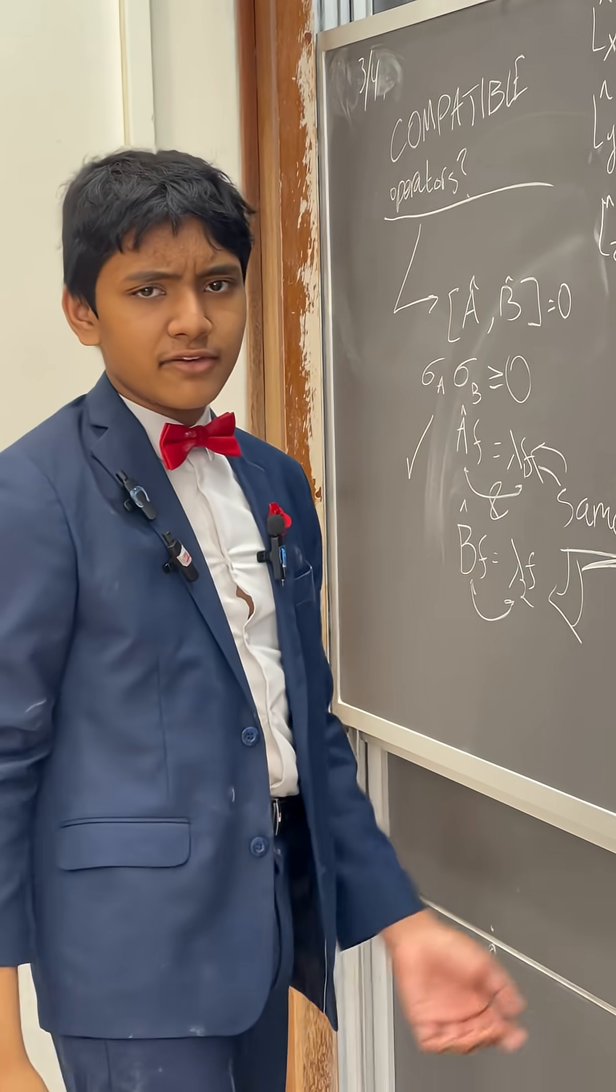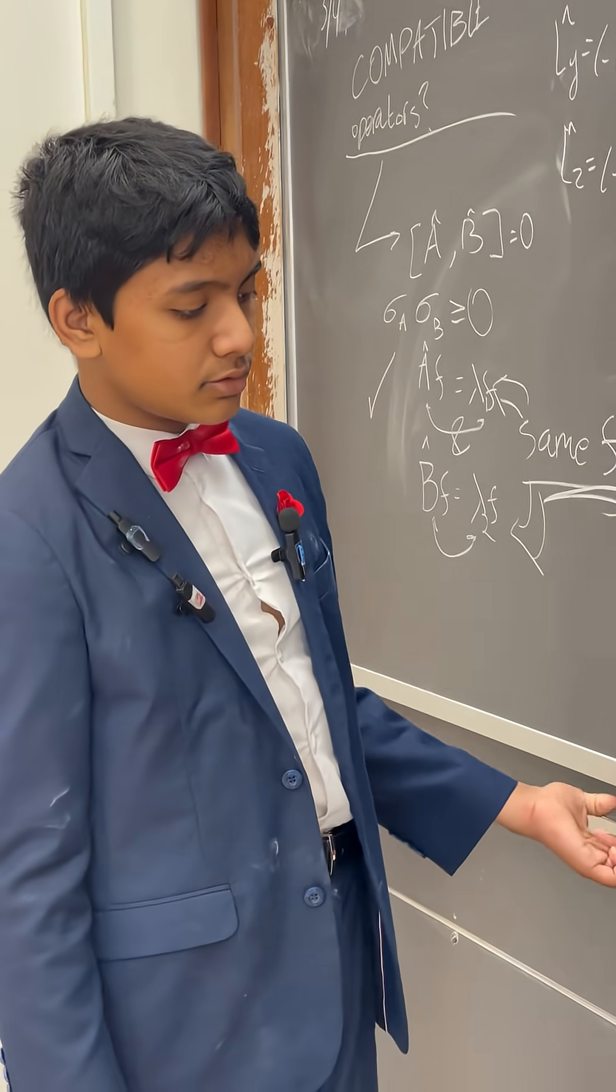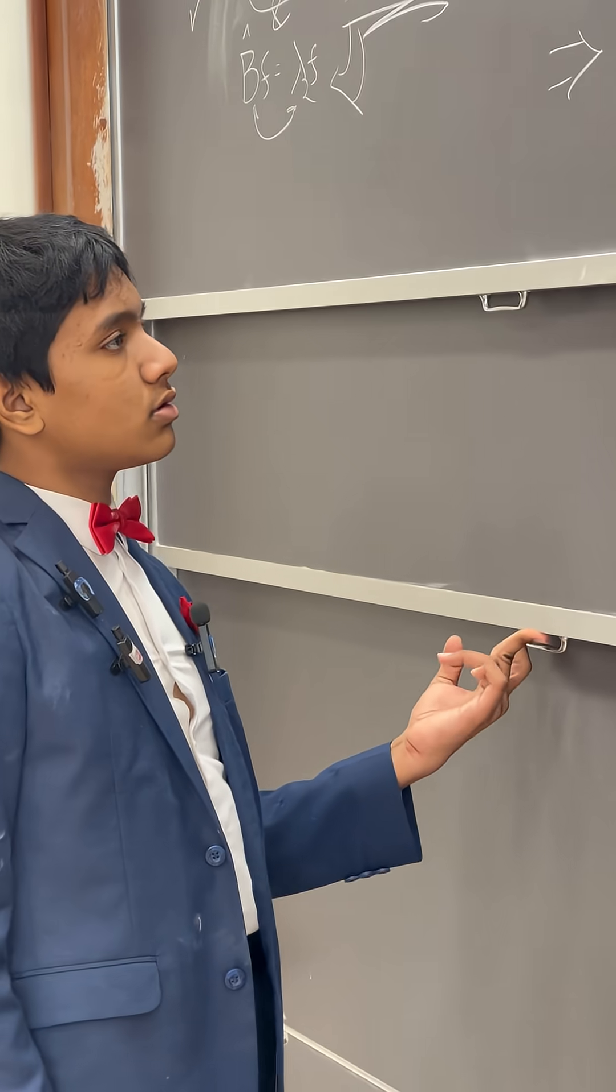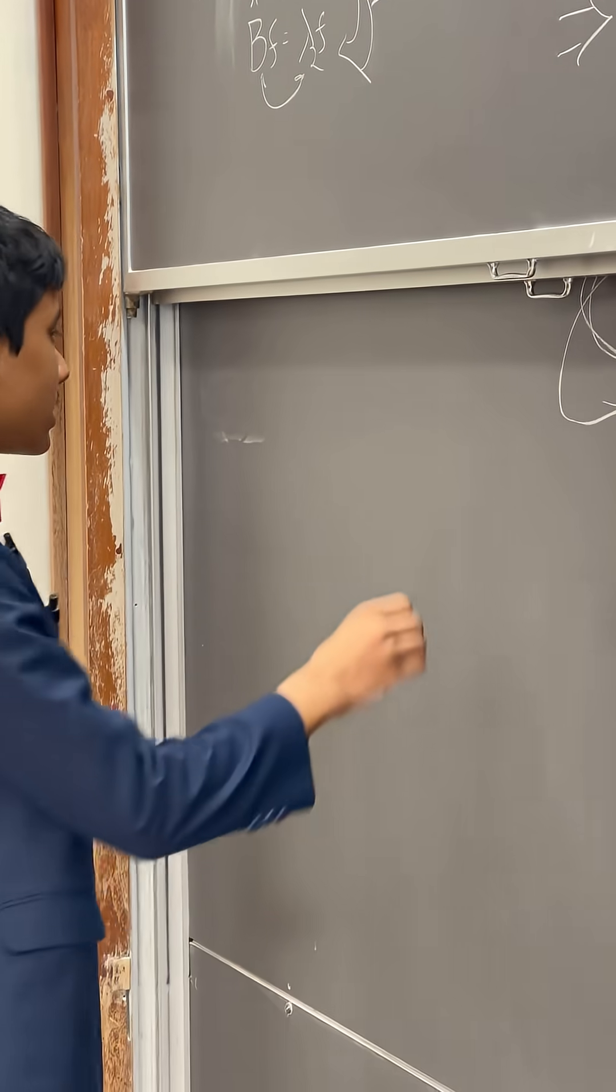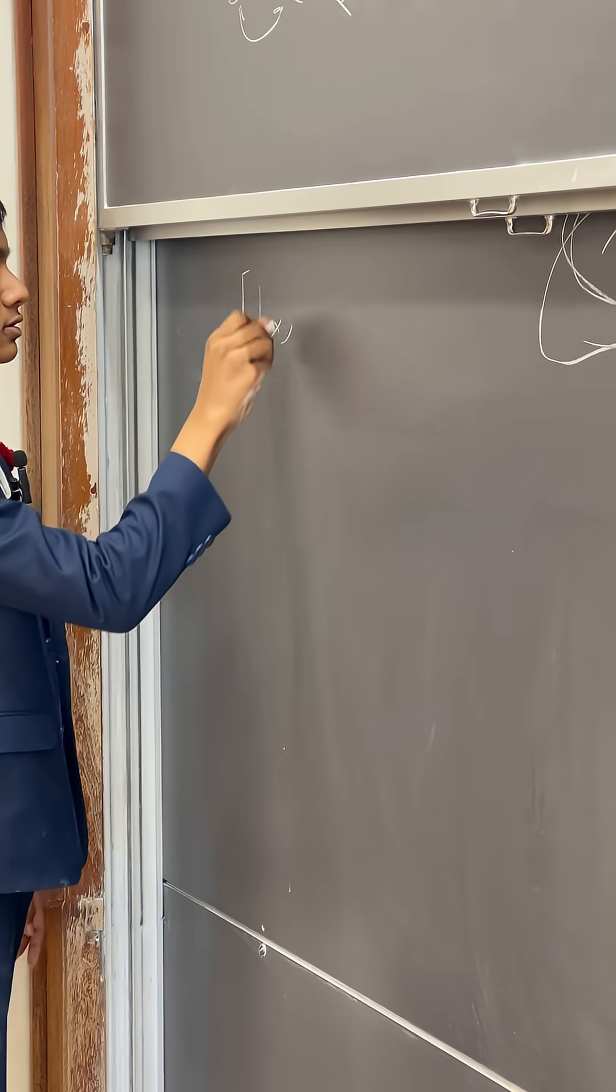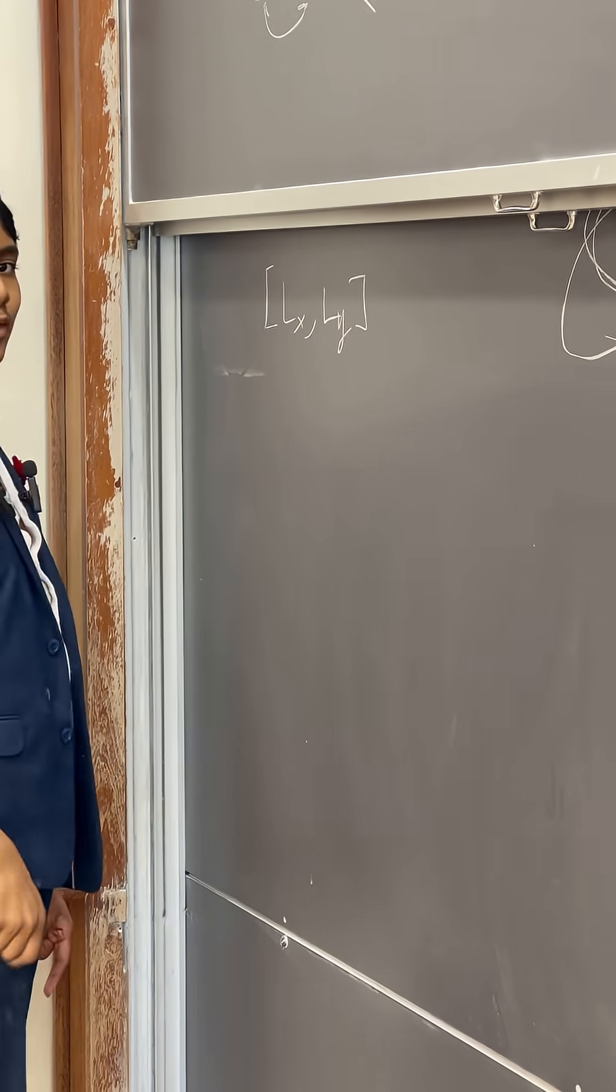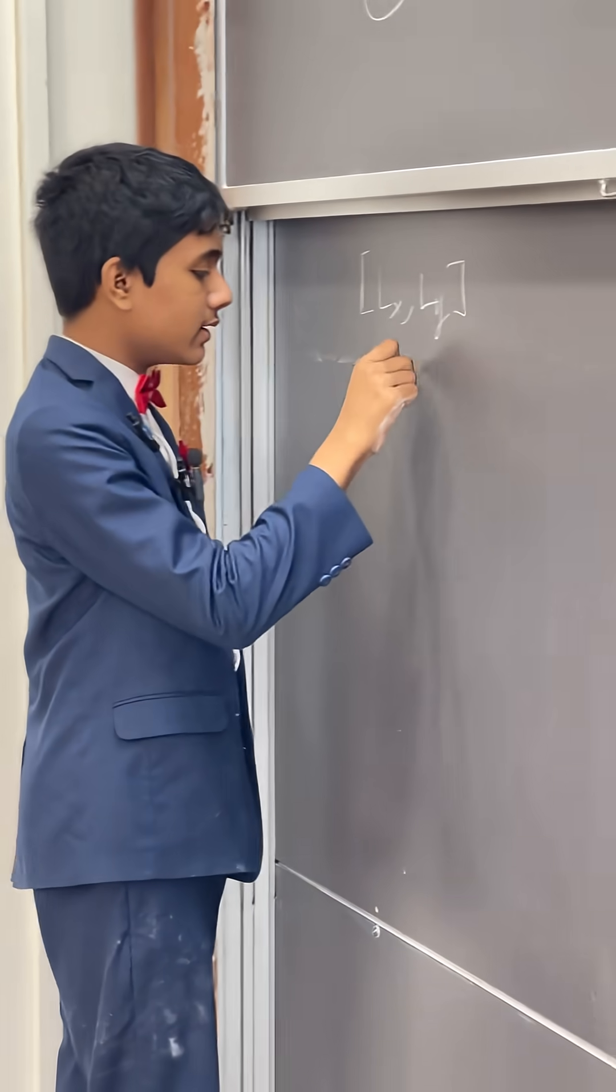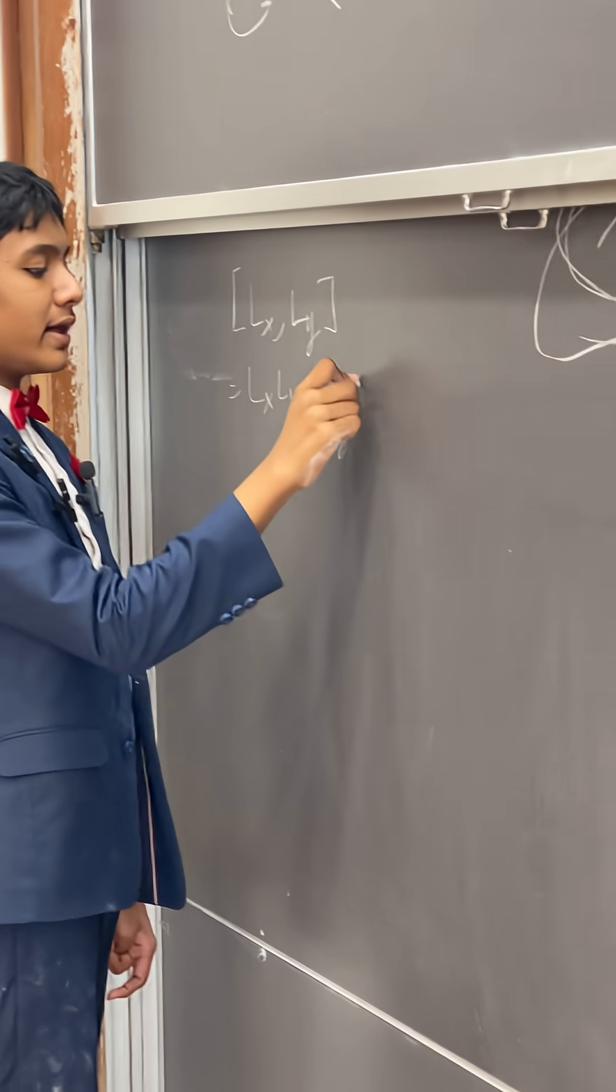So now how can we figure out if two of them can meet? Well, we attempt to calculate their commutator. So let's calculate the commutator of Lx and Ly. So this will just be Lx, Ly minus Ly Lx.